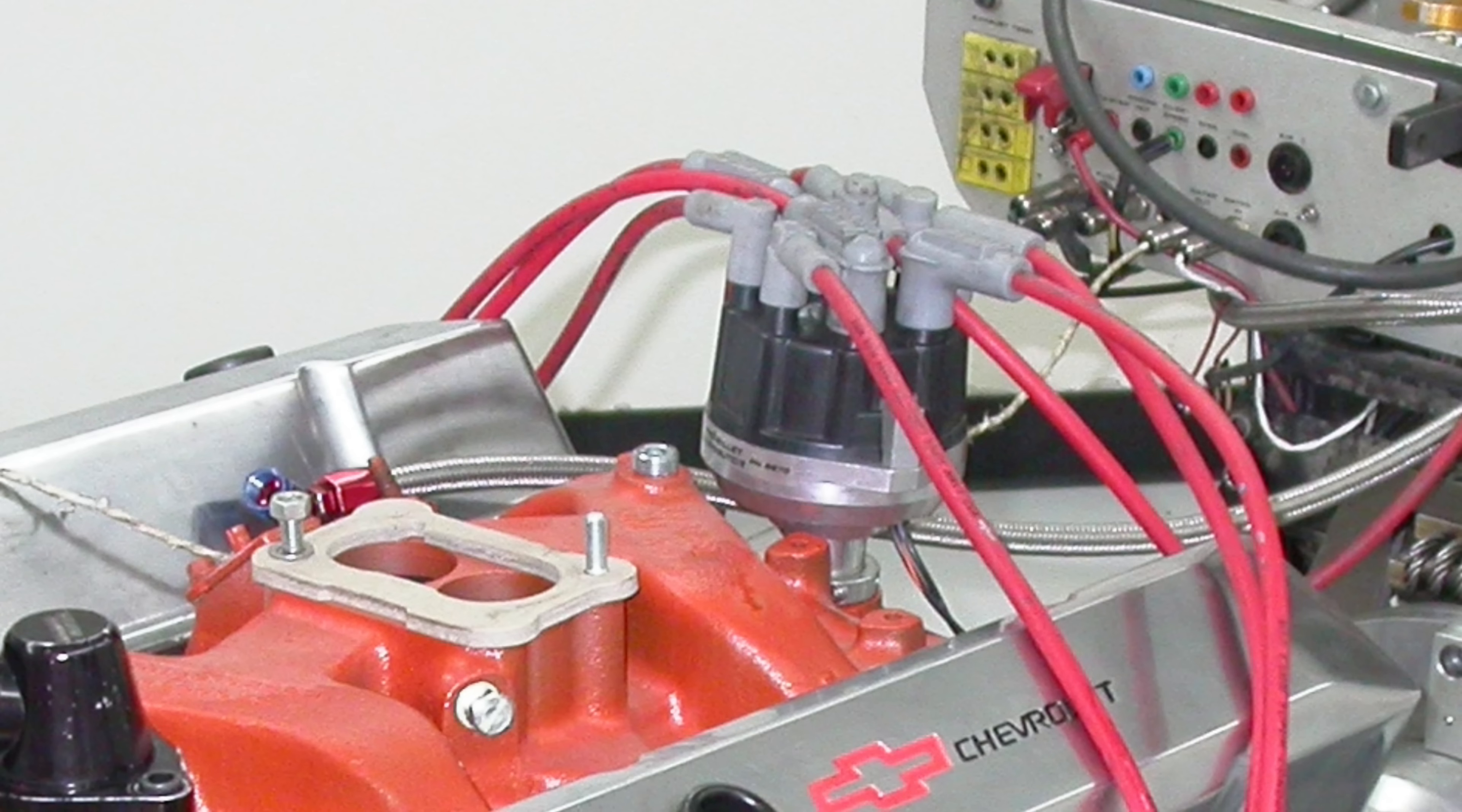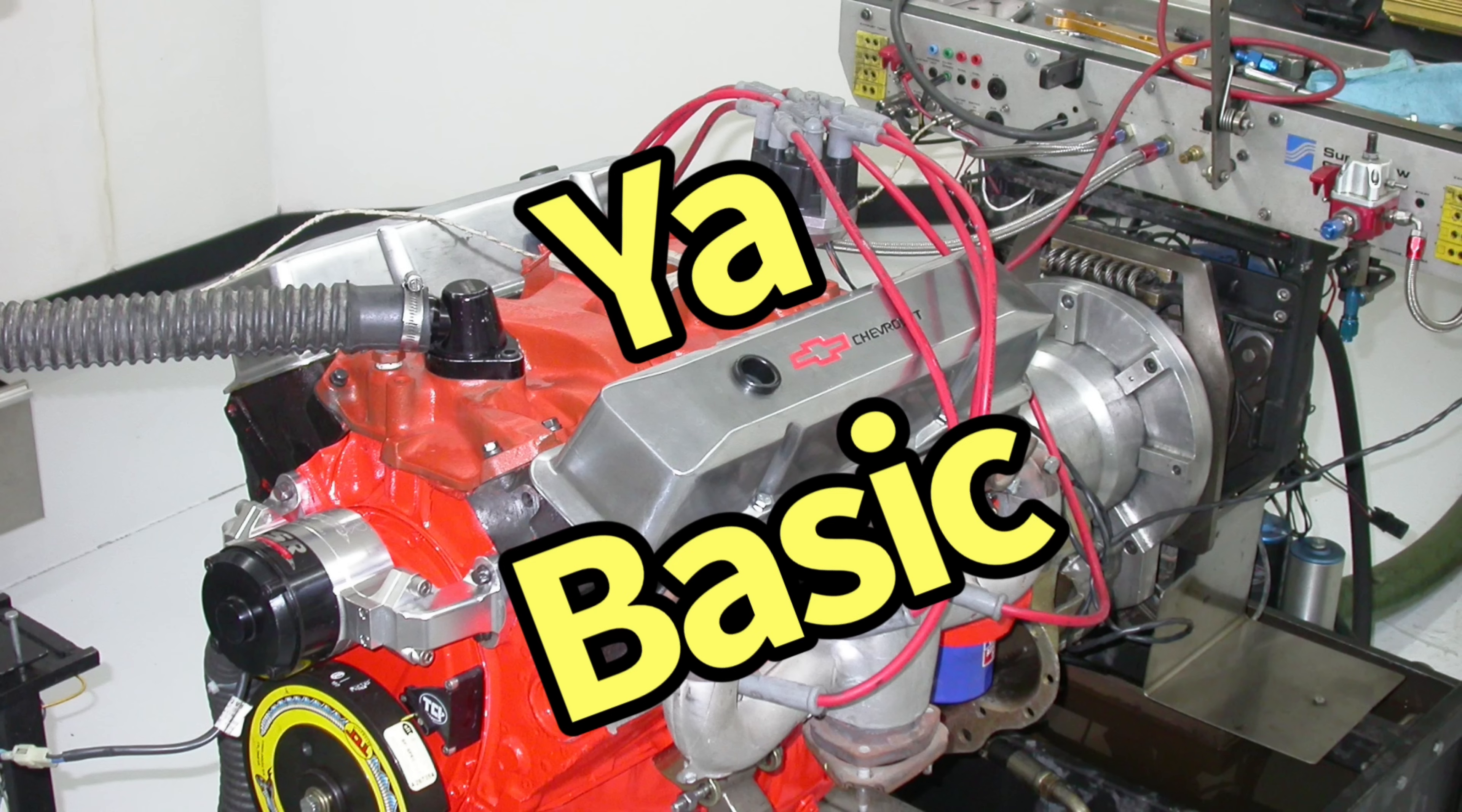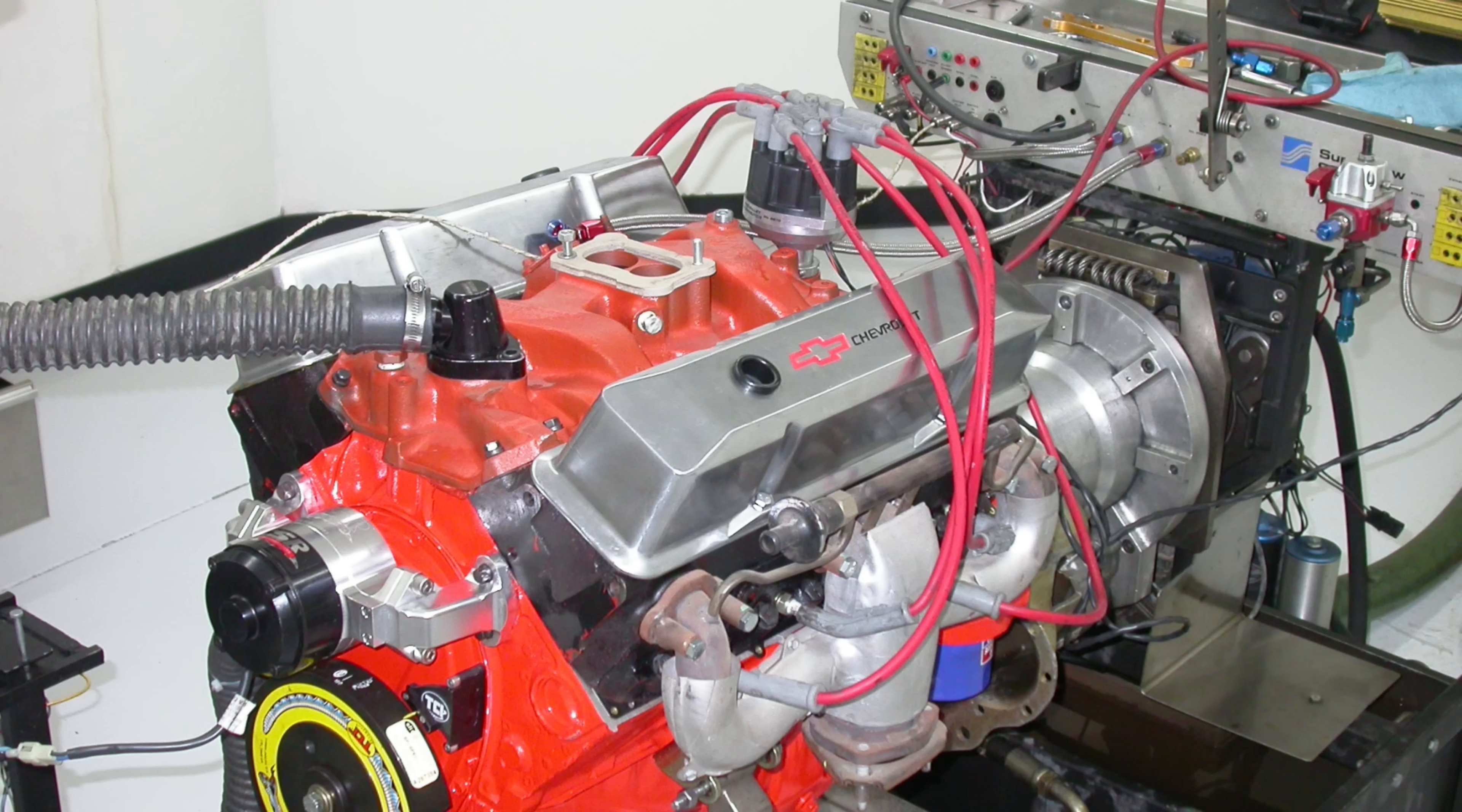We put stock exhaust manifolds on it, ran two-inch exhaust out the back, and put a distributor in this thing. What I wanted to do was basically start out at your lowest performance level: two-barrel smog era, low compression small block Chevy.